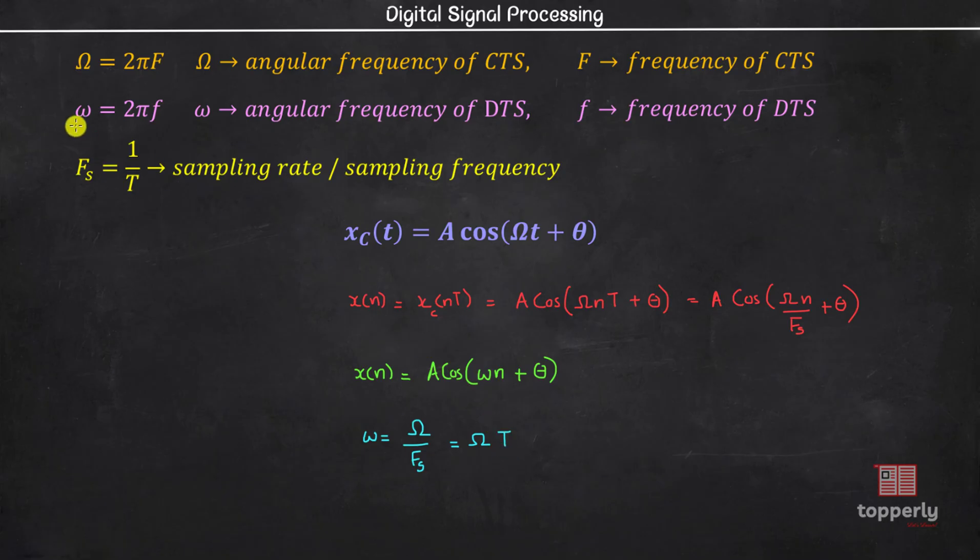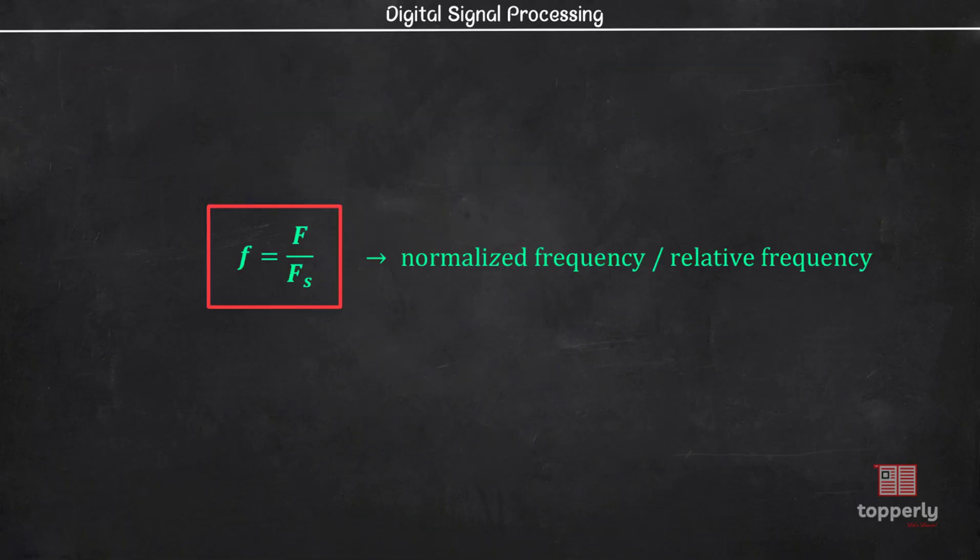Now, substituting this relation into this equation gives us small f equal to capital F by capital Fs. Here this variable small f, which is the ratio of capital F and the sampling frequency Fs, is called the normalized frequency or relative frequency.